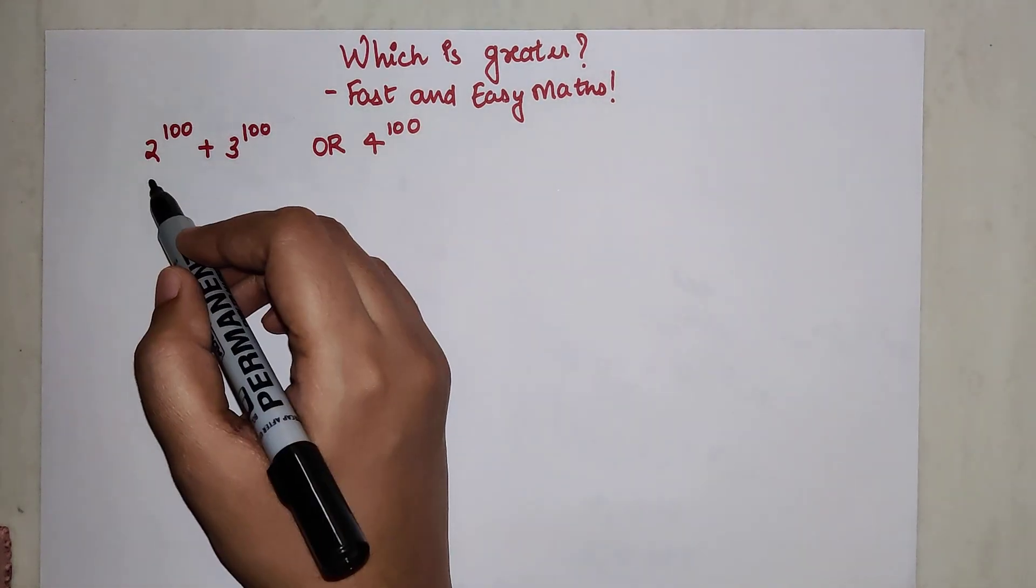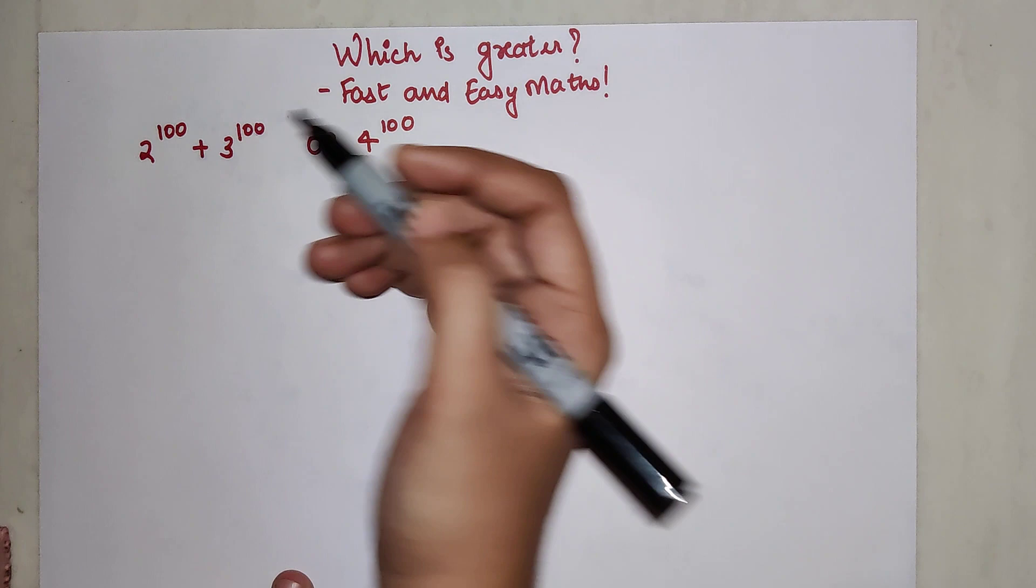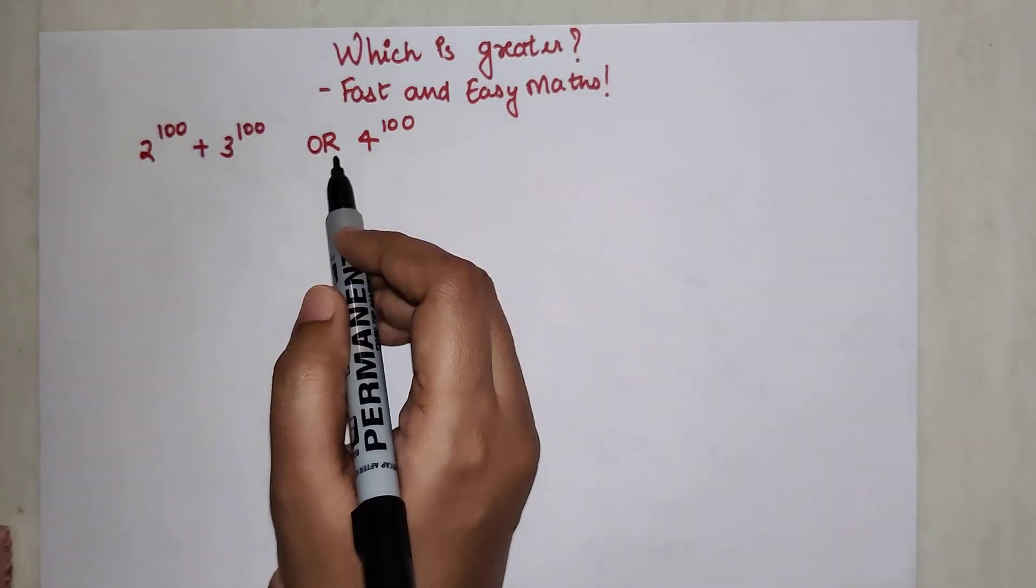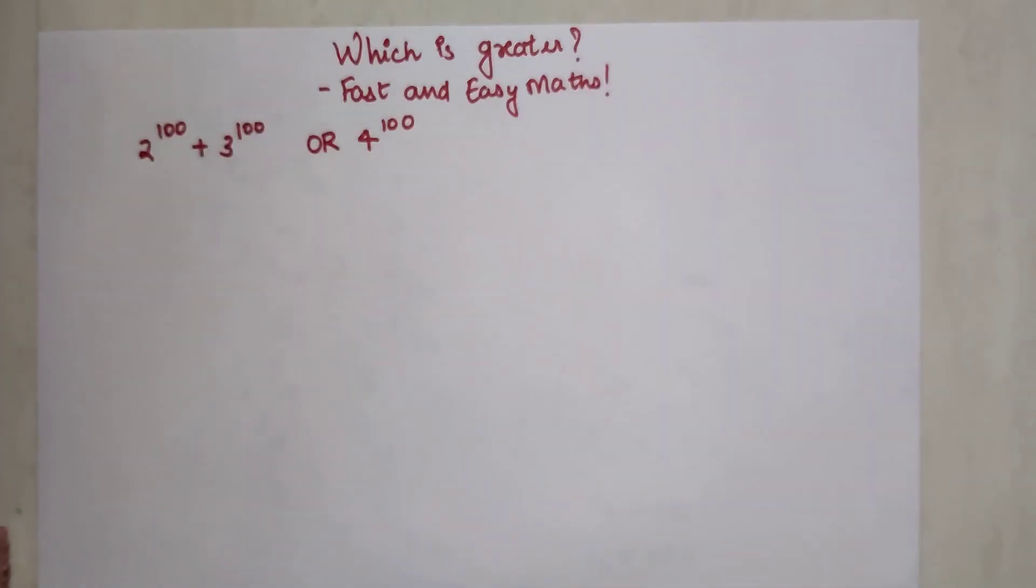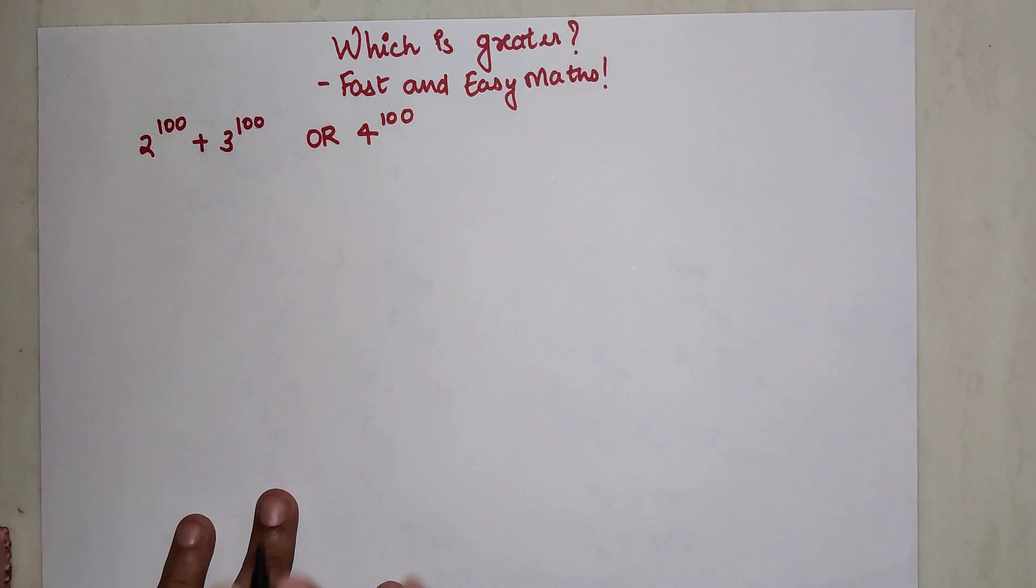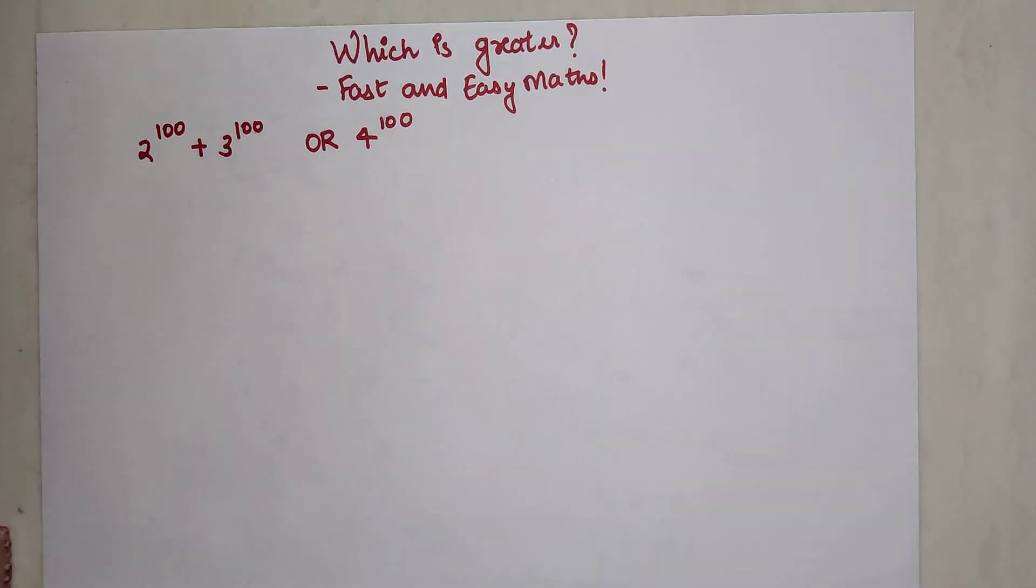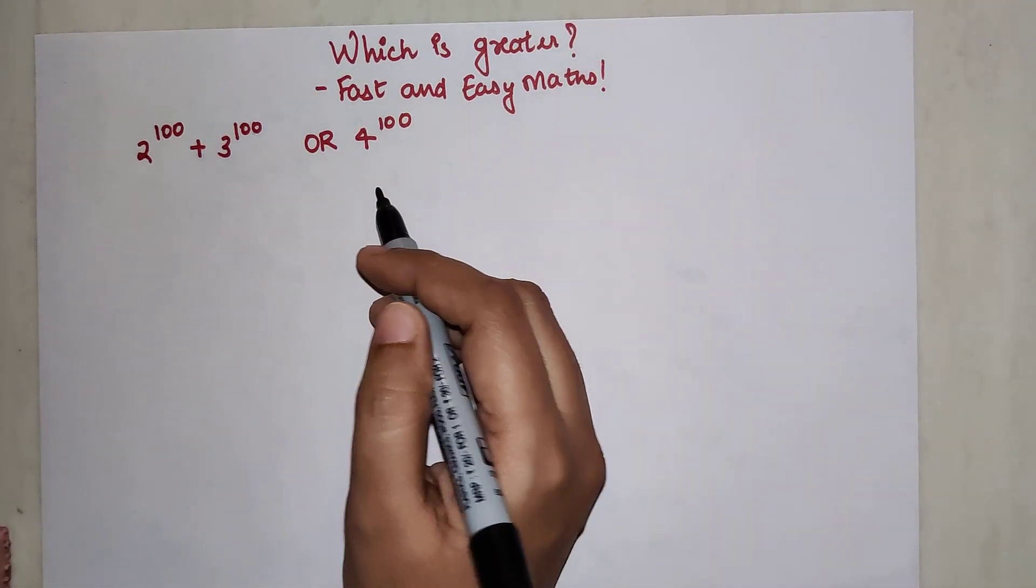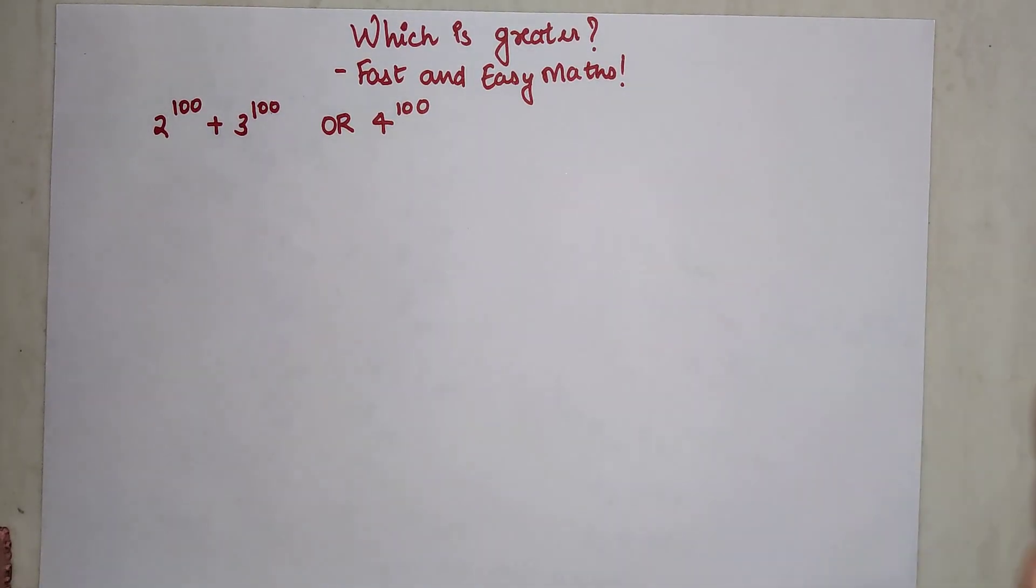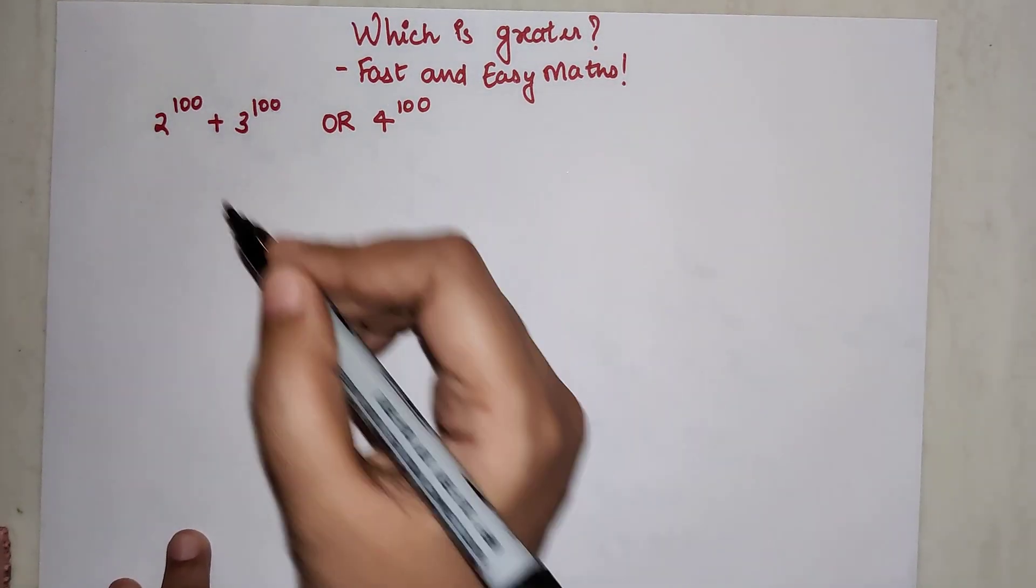The question is: 2^100 + 3^100 vs 4^100 - which is greater between the two entities? In order to solve something like this, you have to have a very strong hold of your indices. If you don't know that, please let me know in the comment section and I will definitely try to make a separate video on that.